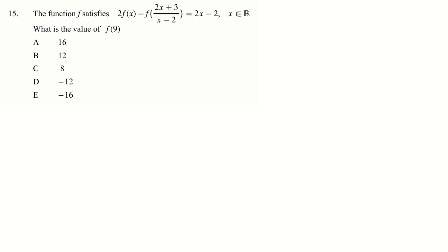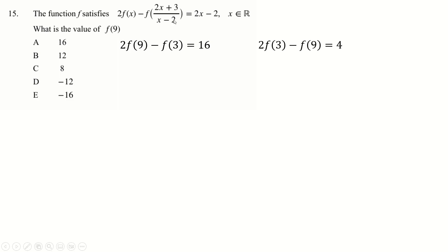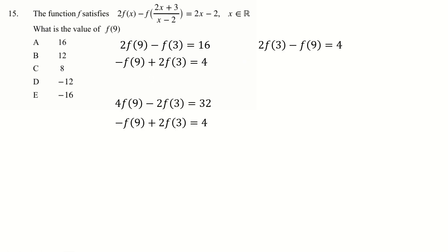Question 15 is very similar — definitely try this yourself. We need f(9): substitute x = 9, giving (2×9 + 3)/7 = 21/7 = 3, so f(3) appears. Then substitute x = 3: (2×3 + 3)/(3 − 2) = 9/1 = 9, which brings f(9) back. Stack these as simultaneous equations, multiply one by 2, add them together, divide, and get the answer f(9) = 12.